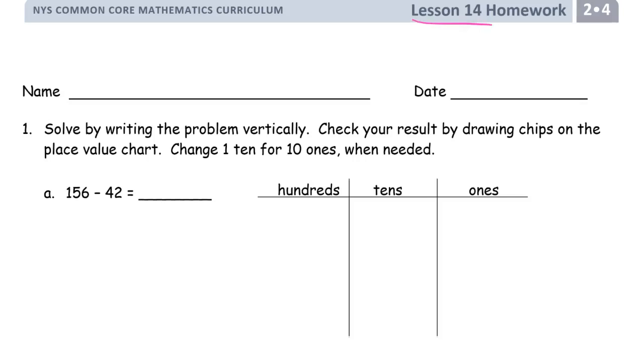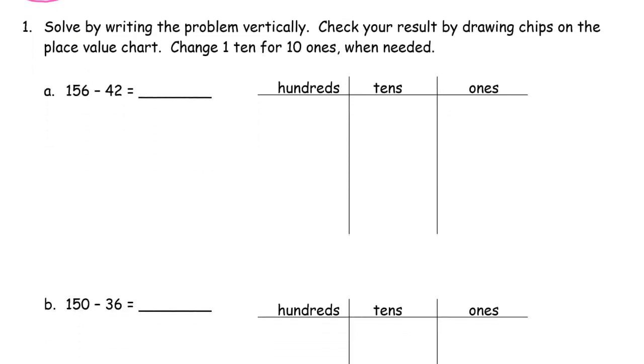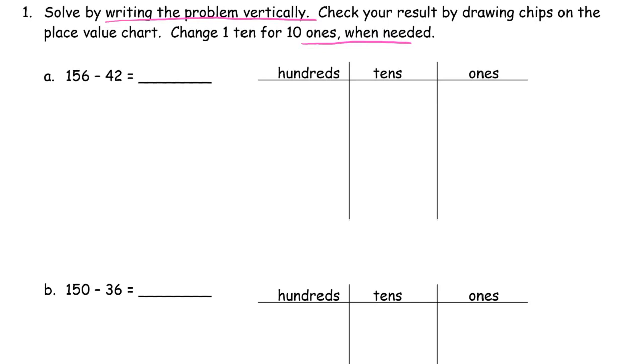This is lesson 14 homework, grade 2 module 4. Write your name first. Solve by writing the problem vertically and check your result. So we're going to solve it first vertically and then check the result by drawing chips. Change one ten for ten ones when needed. Now we've been doing this already but now we're working with hundreds.